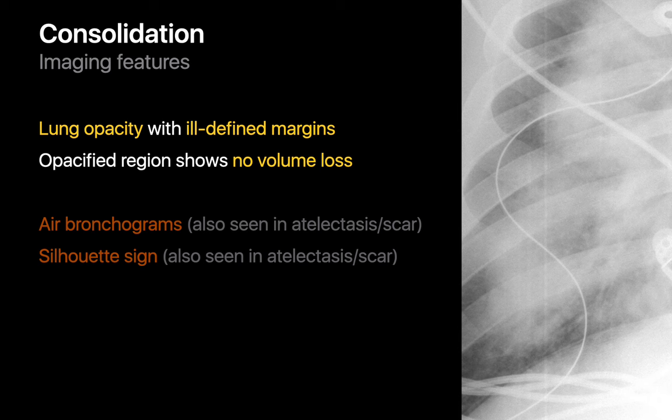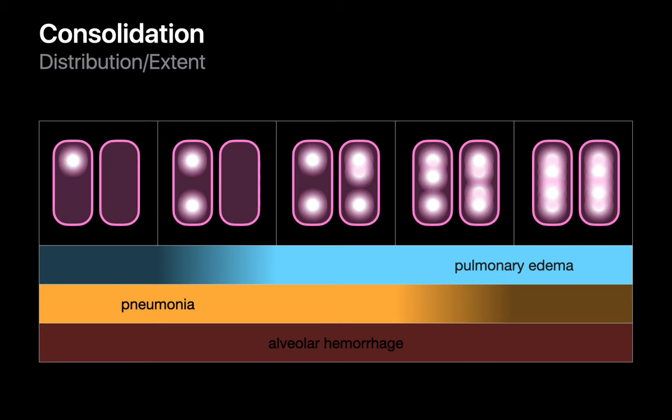If you're comfortable labeling a lung opacity as consolidation, how do you decide if pulmonary edema, alveolar hemorrhage, or lung infection is the most likely explanation? The distribution provides a hint: diffuse distributions heavily favor pulmonary edema, and non-diffuse distributions favor lung infection. Focal, multifocal, and diffuse distributions occur with relatively uniform regularity in alveolar hemorrhage, though it's a much less common diagnosis than the other two.